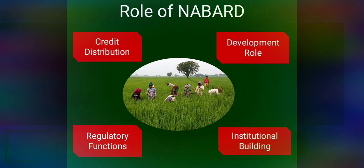The second role of NABAD is the development role. In this role, NABAD coordinates the rural credit institutions, takes measures toward institution building to improve the capacity of the credit delivery system, helps the government, RBI, and other institutions in their rural development efforts, and also acts as an agent for the government and RBI for monitoring work in agriculture-related areas.